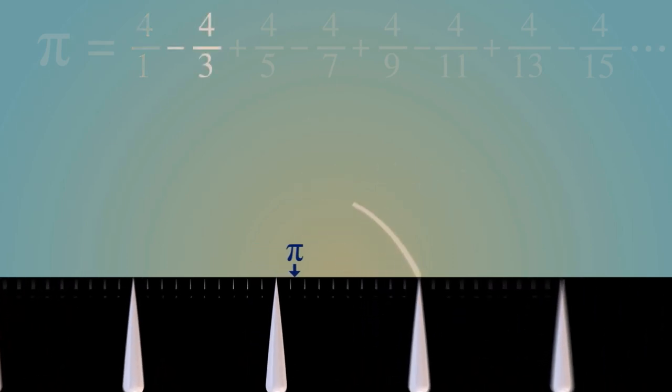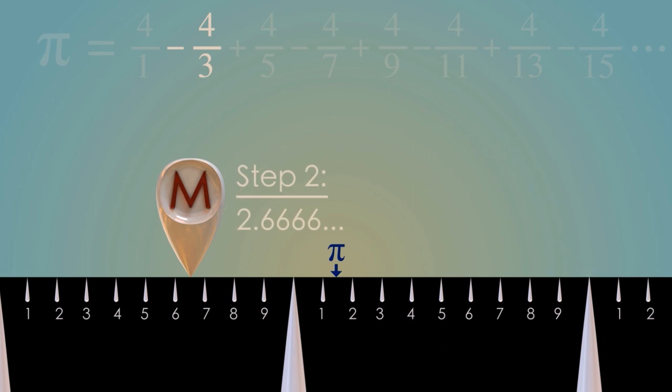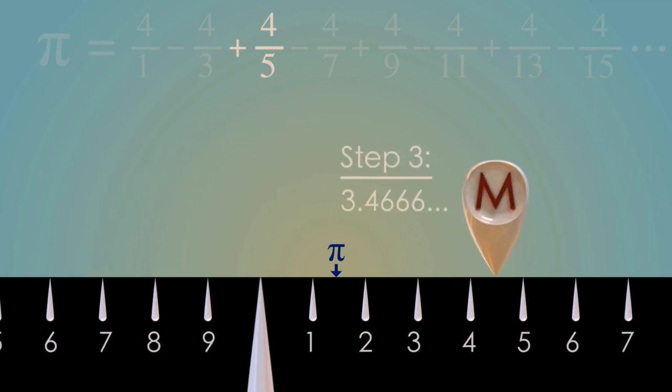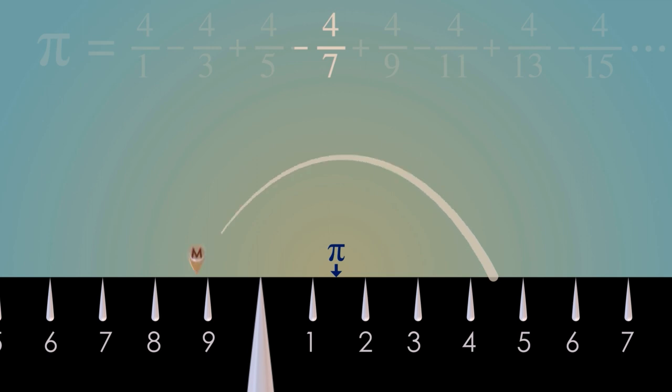That takes us down to 2.66, which is too low. But now we're going to add 4 fifths, and that brings us up to 3.466. So I'm going to let this run. The thing to focus on is that number pi in the middle, and to notice that with each step, we get closer and closer to pi. Pi is, in fact, the ultimate destination of this series.